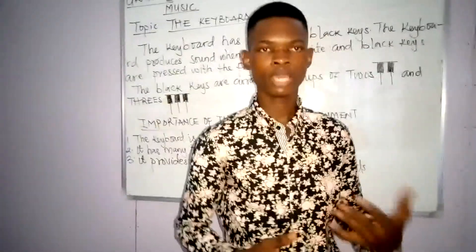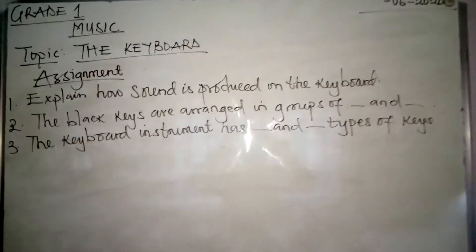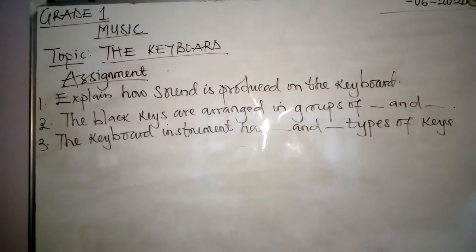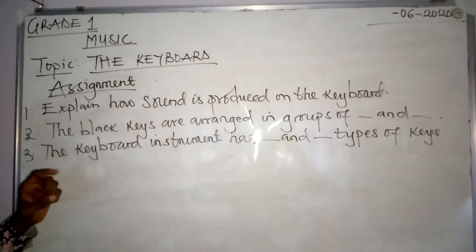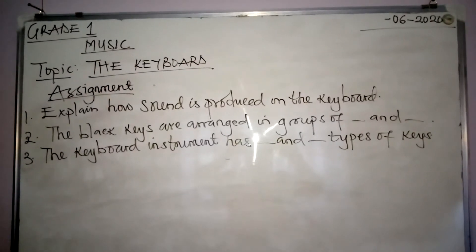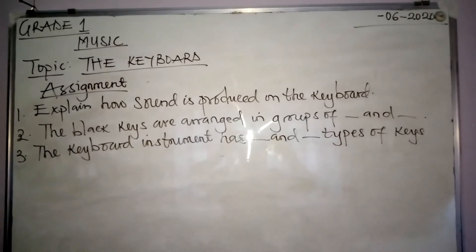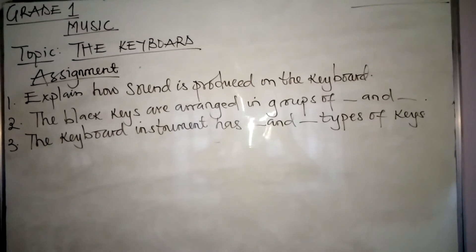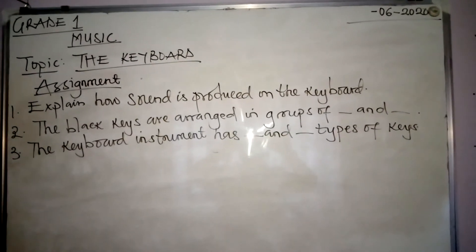We'll take assignments and end the class. This is your assignment on the board. Number one: explain how sound is produced on the keyboard — tell me how sound is being produced. Number two: the black keys are arranged in groups of dash and dash — tell me what kind of groups. Number three: the keyboard instrument has dash and dash types of keys — can you tell me what kinds of keys the keyboard has?